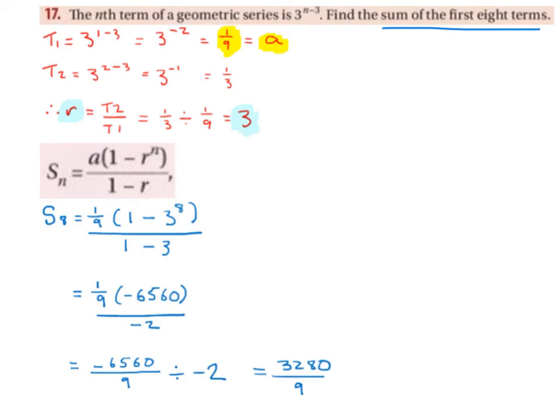When dividing, we turn the second fraction upside down and multiply. So we're multiplying by minus 1 half, and we end up getting 3280 over 9.